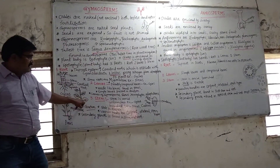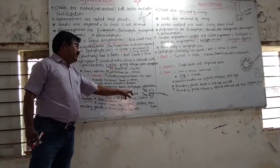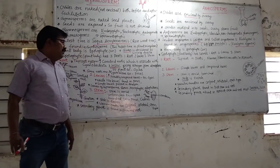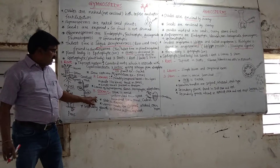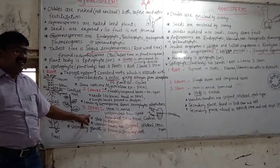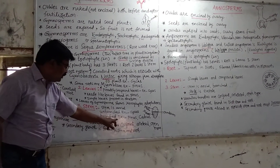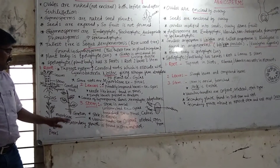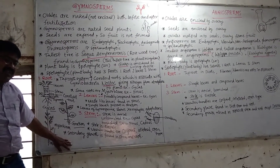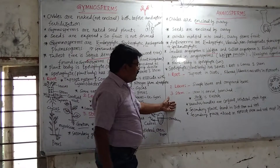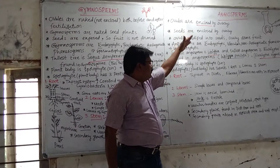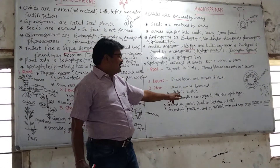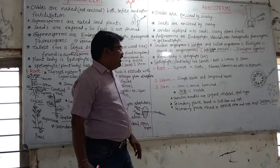In the stem, gymnosperms are generally unbranched, while angiosperms can be branched. In the stem of angiosperms, vascular bundles are arranged in a circular form — this is called a eustele. The vascular bundle type is conjoint collateral open type.